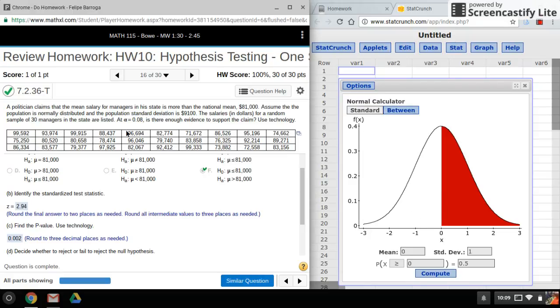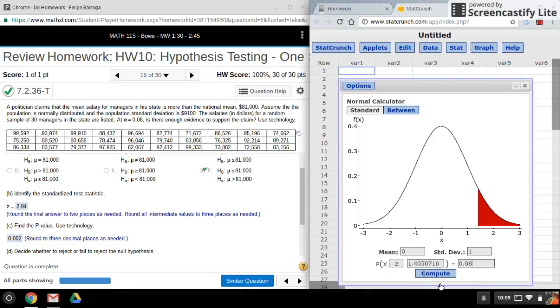And that's my critical value there. It's not listed on the problem here, but this would be our critical value and that's the rejection region.